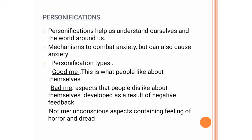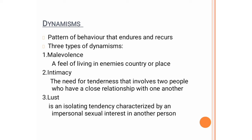Next is dynamism, a pattern of behavior that endures and recurs. There are three types of dynamism. First, malevolence — a feeling of living in an enemy's country or place. Second, intimacy — the need for tenderness that involves two people who have a close relationship with one another. And last, lust — an isolating tendency characterized by an impersonal sexual interest in another person.